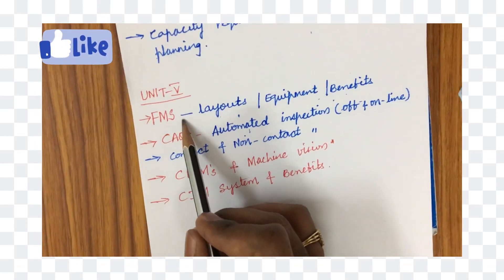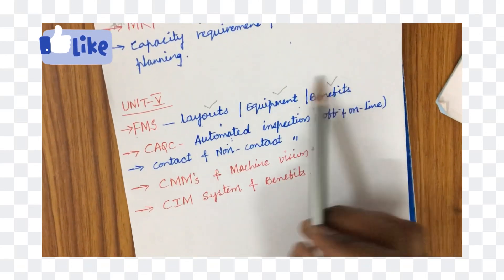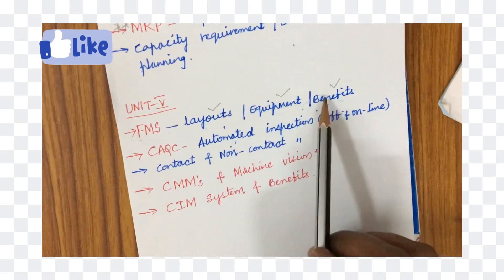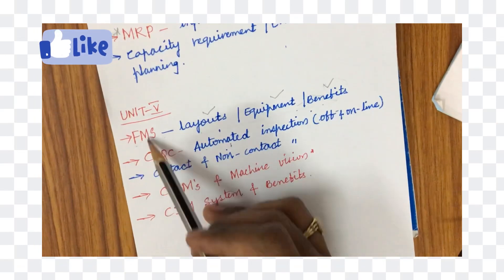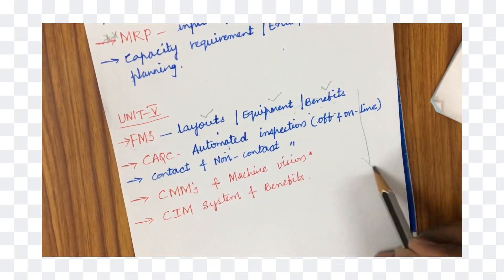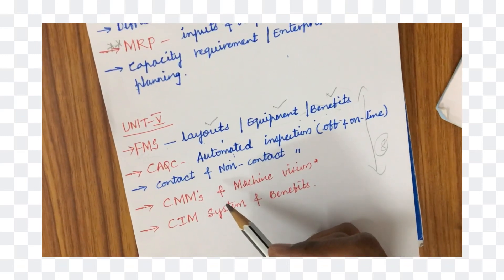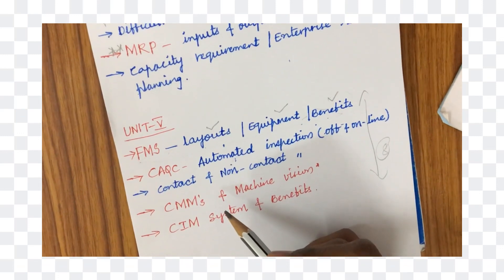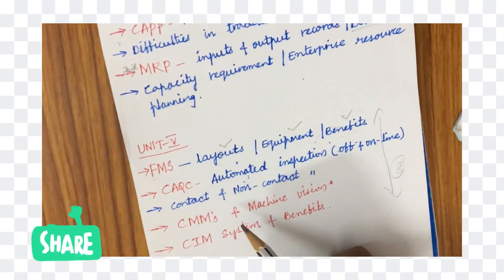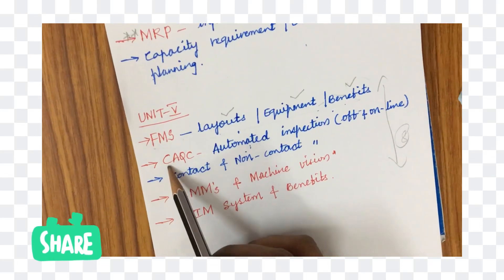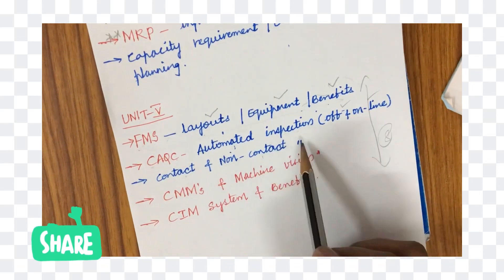Unit 5 is all about flexible manufacturing systems — FMS — its layouts, equipment, and benefits. If this question is asked, they may focus on listing layouts or equipment and benefits with neat diagrams. This unit will likely have one question as the 8th question. The unit also covers computer-aided quality control, automated inspection — offline and online inspection — and contact and non-contact inspection.